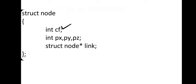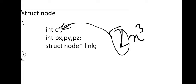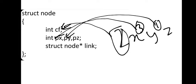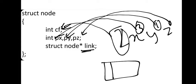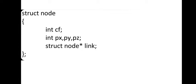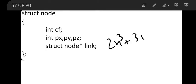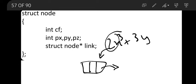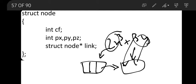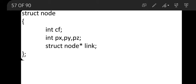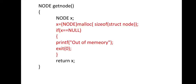This is the struct node. For a polynomial like 2x³, 2 is the coefficient (cf) and 3 is the power of x. If there is a y term like y¹, that is py. If there is no such term it will be 0, and there is a link field. So the node looks like: coefficient, then powers of x, y, z, then the link. For example, 2x³ + 3y would be stored as two linked nodes, each holding their coefficient and respective powers.